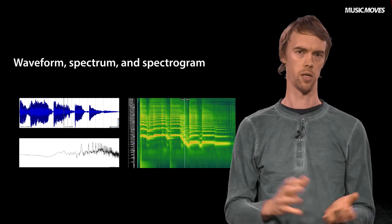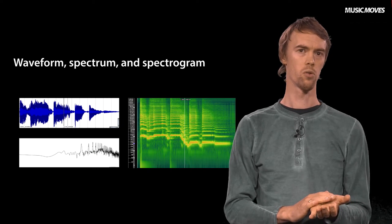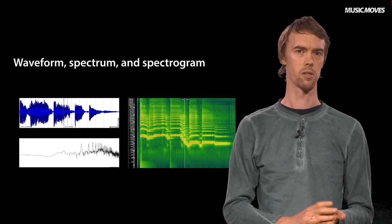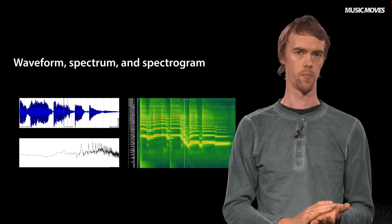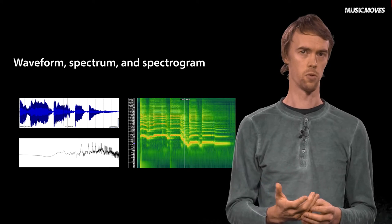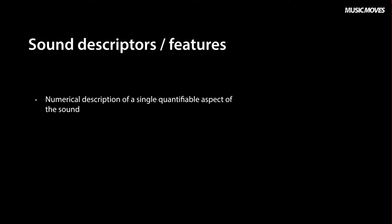Sound is generally too complex to describe fully with a single number or graph, but a good description can be given if you decide to just look at a single aspect of the sound at a time. Such an aspect is what we usually call a sound feature or a sound descriptor. A descriptor is a numerical description of some quantifiable aspect of the sound.